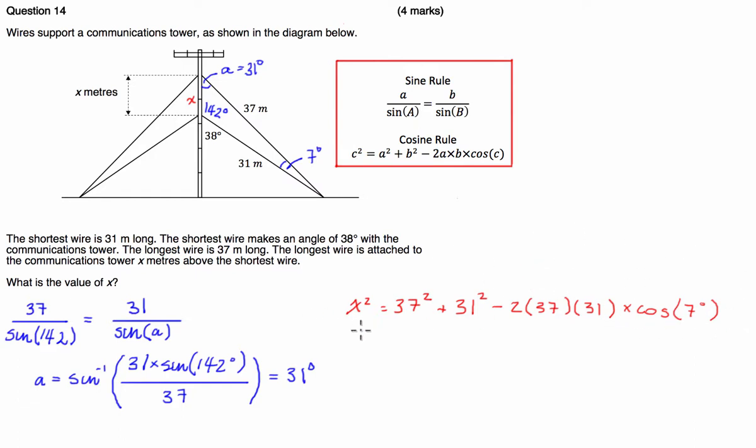And so what we end up with there guys is once we square root the entire thing, x is going to be equal to the square root of this entire expression, and we get an answer for x which is equal to 7.29 metres.